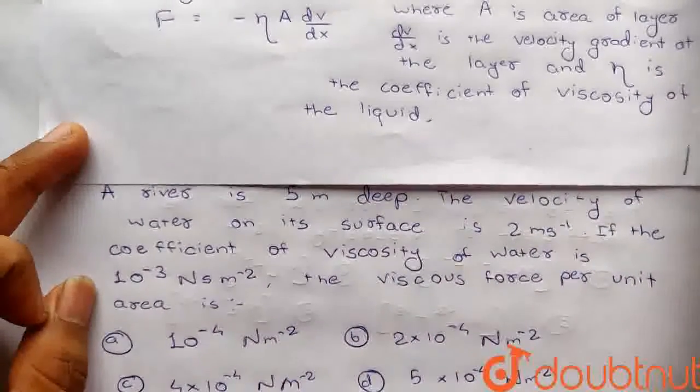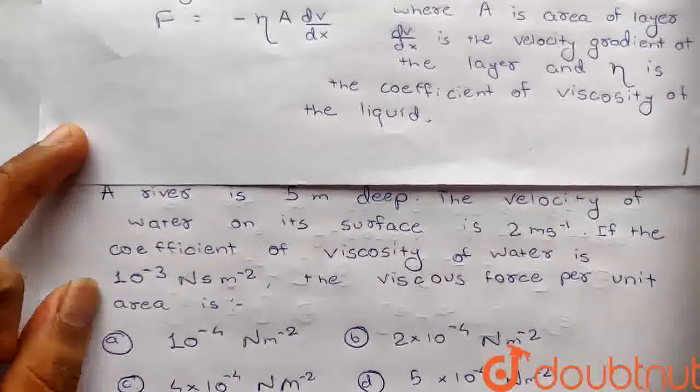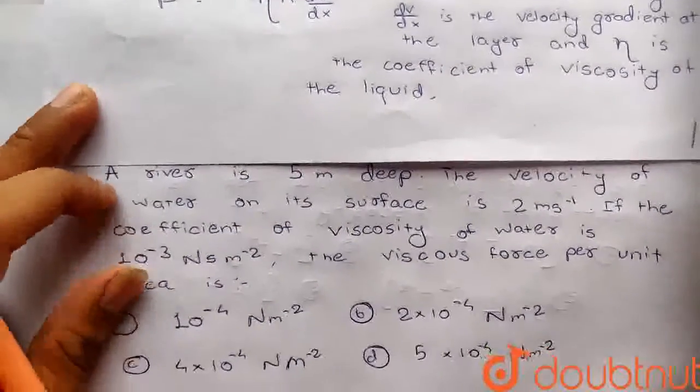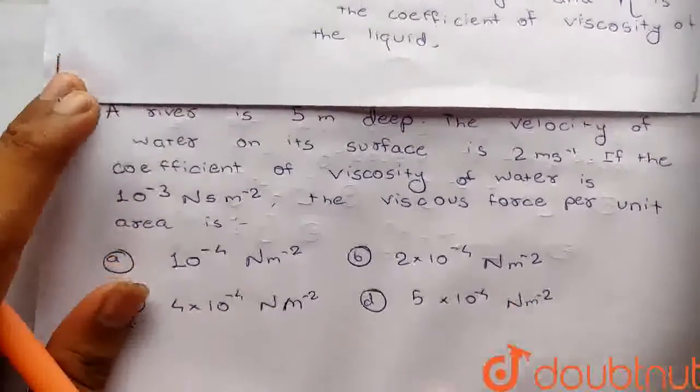Now, viscous force per unit area we need to find out. In this case, the river is 5 meters deep and the velocity on the surface is 2 meters per second.